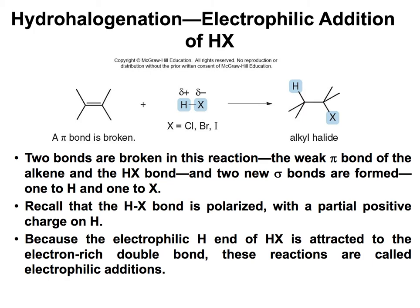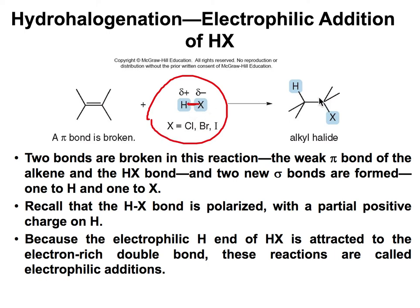Let's talk about the first type of addition reaction: hydrohalogenation. In a hydrohalogenation, we start with a double bond and that pi bond will be broken. We end up with addition of H and X across the double bond. One pi bond is broken, one sigma bond is broken, and two sigma bonds will form.